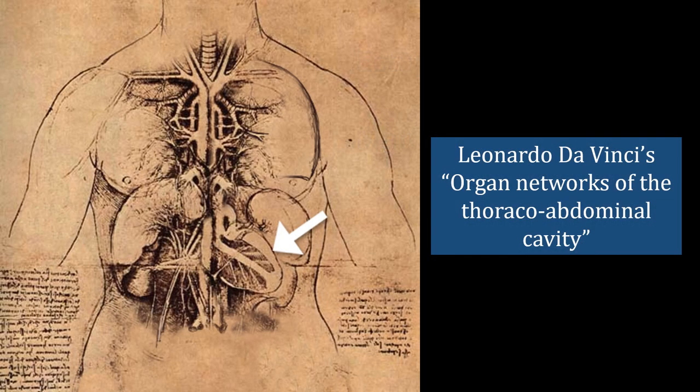This is Leonardo da Vinci's organ networks of the thoraco-abdominal cavity. There remains academic debate as to whether this was based off a corpse with ectopia cordis interna, or whether the heart's location was a deliberate distortion of reality by the artist.